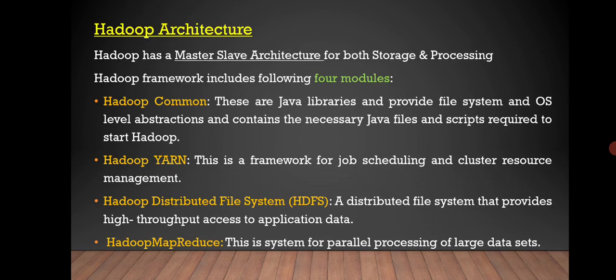Now let us see about Hadoop architecture. Hadoop has a master-slave architecture for both storage and processing. Hadoop Framework includes 4 modules: Hadoop Common, Hadoop YARN, Hadoop Distributed File System, and Hadoop MapReduce. These are Java libraries and provide file system and OS level abstractions and contain the necessary Java files and scripts required to start Hadoop.